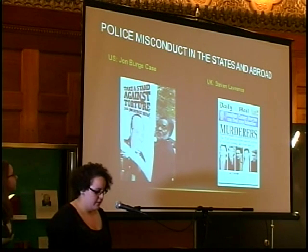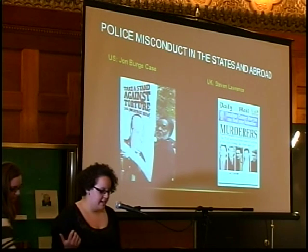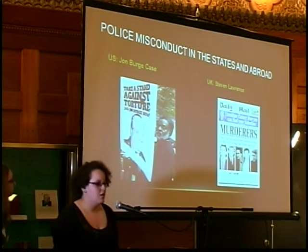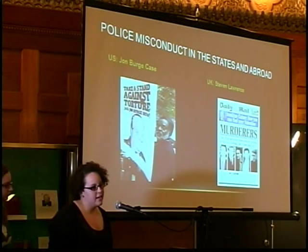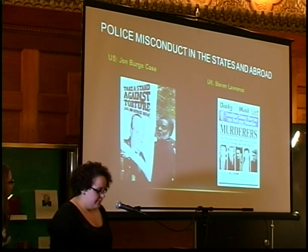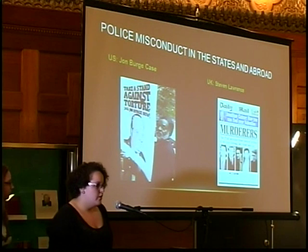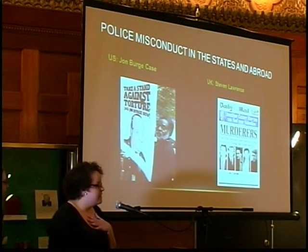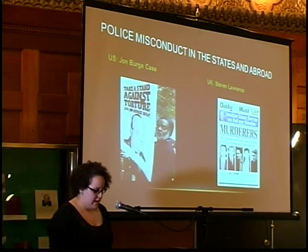Two major cases in the US: the John Burge case involved 101 known victims of torture and set the precedent for police misconduct in the states. The majority of victims were located in areas two and three of Chicago — highly segregated and criminalized areas of the south side — and most of Burge's victims were racial minorities, which perpetuated institutional racism throughout Chicago police misconduct.